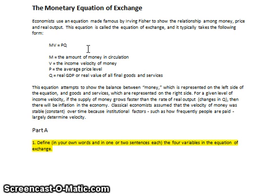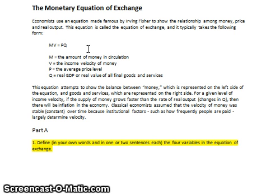V is the velocity of money — think of it as how fast money is traveling through the national economy, kind of like how quickly blood is circulating through the body and the pressure at which it circulates, which we measure as blood pressure. So V is the speed at which money is circulating through the economy. We've got the supply of money multiplied by the velocity of money equals PQ, where P is the price level measured by a price index, and Q is real GDP.